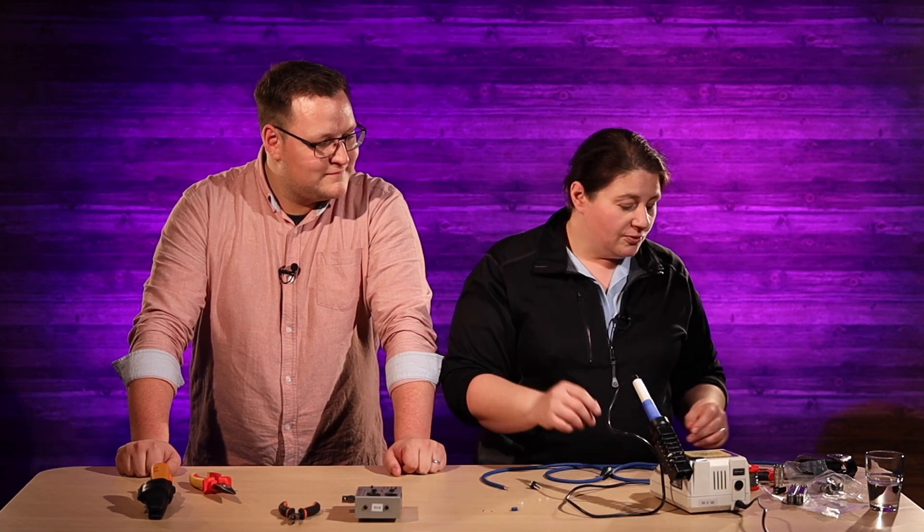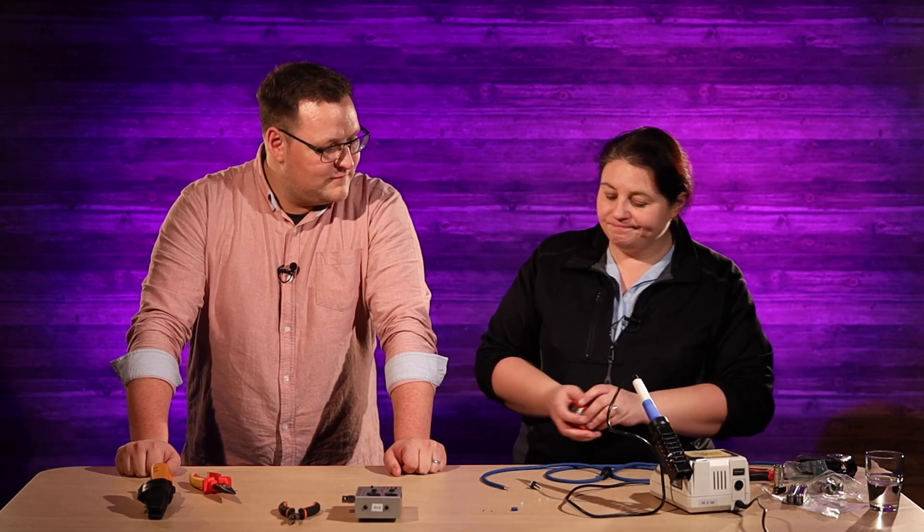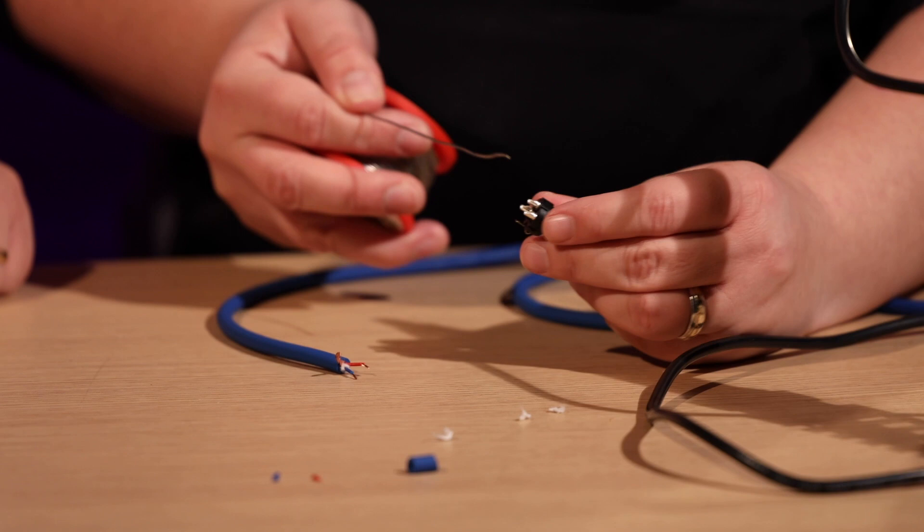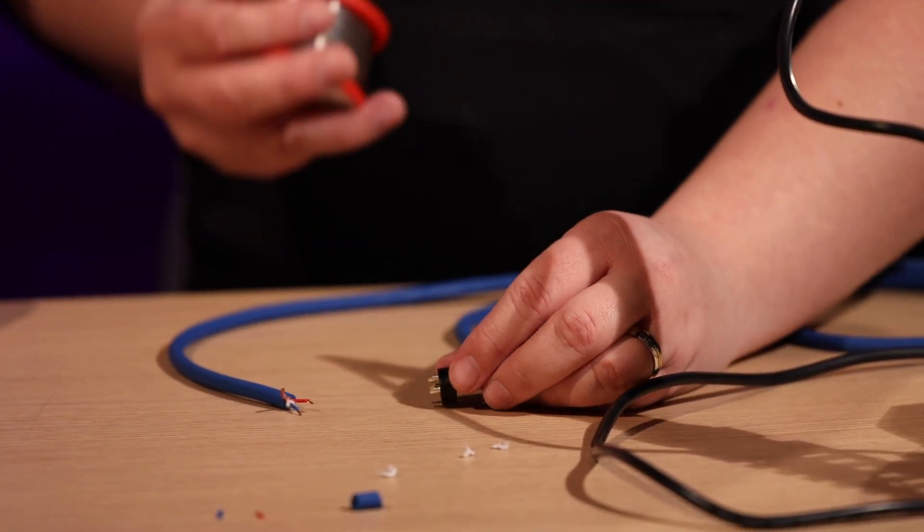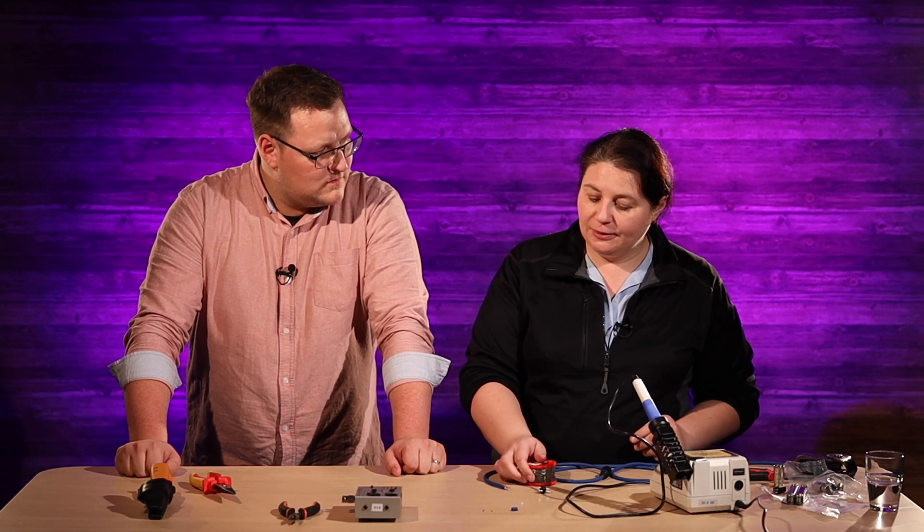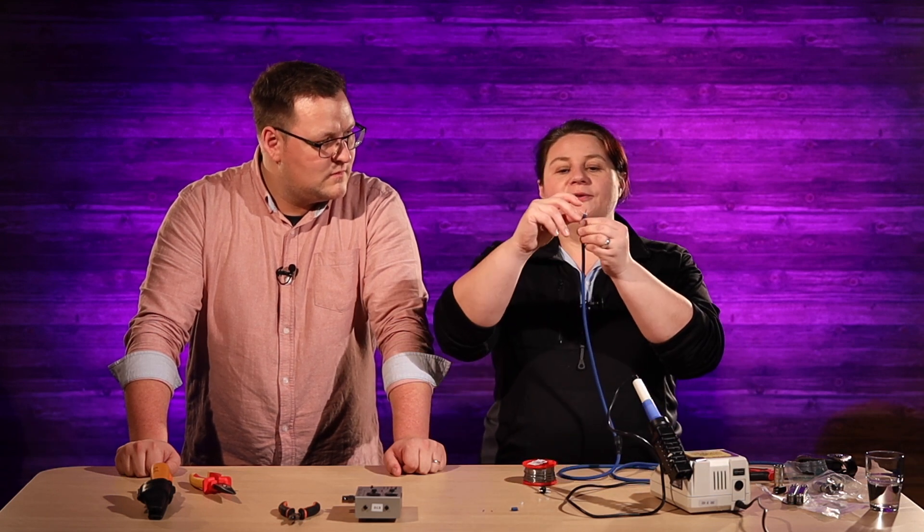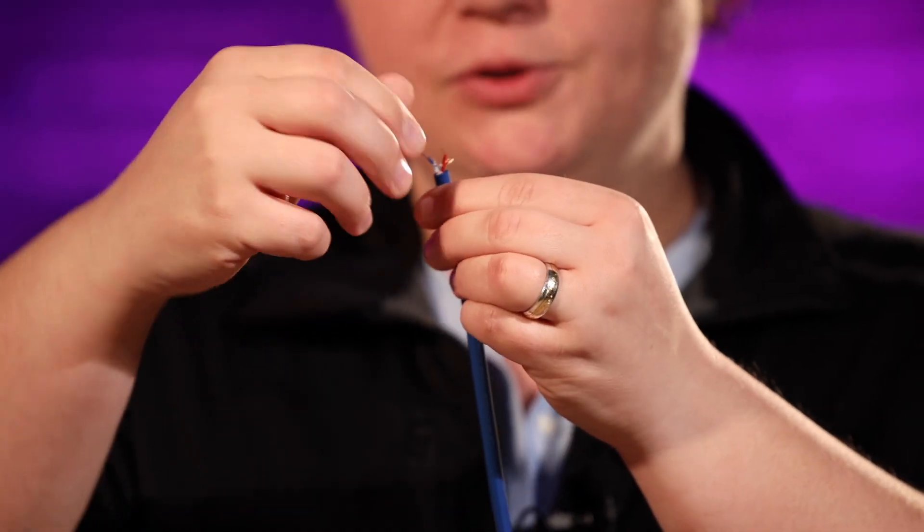Also you want to be really careful that you're not putting too much heat on these and melting the rubber on those because the same thing can happen. So let's do this. There's a couple of different methods you can use. I kind of prefer putting a little bit of solder on the cables first so that they don't fray.